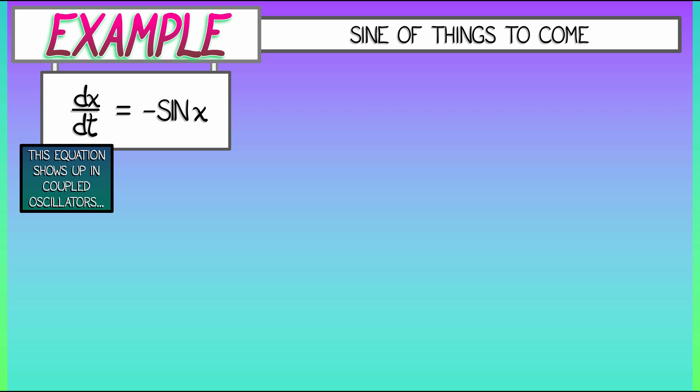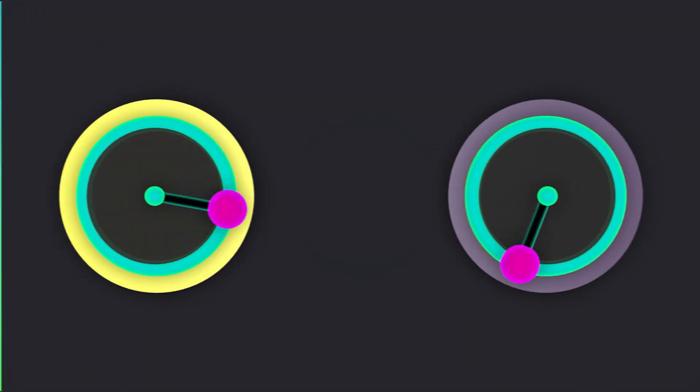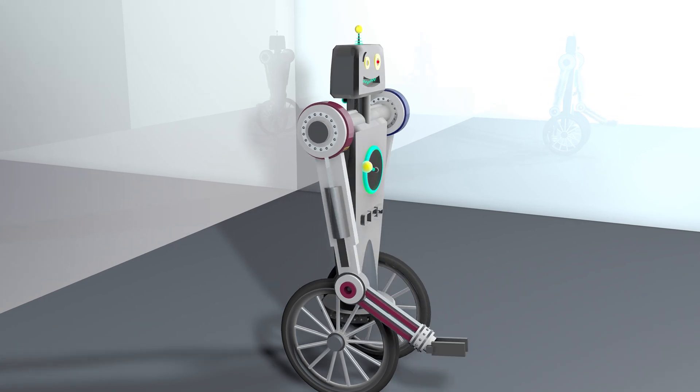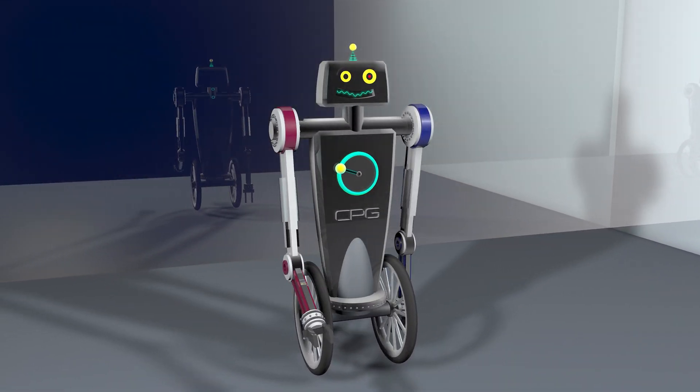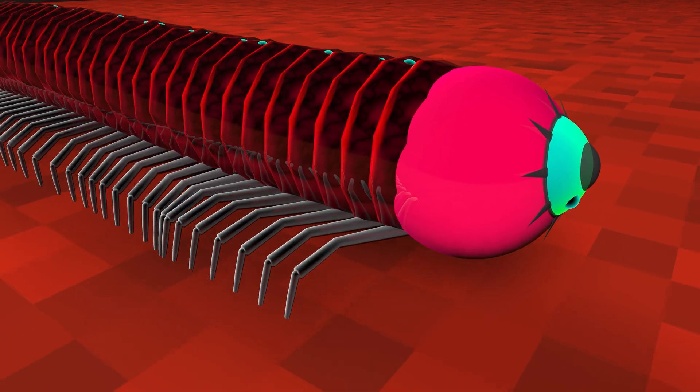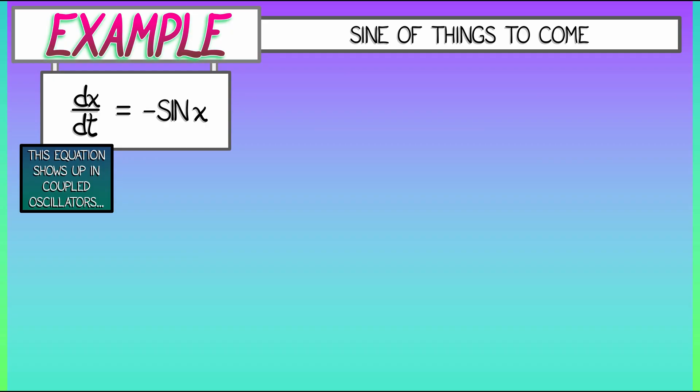It's a really cool equation. It shows up in studies of coupled oscillators. We have a collection of spinners that are linked together and they tend to synchronize. And this has implications in things like robotics, in things like biology, really cool stuff.